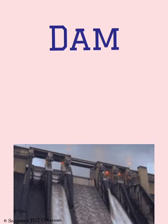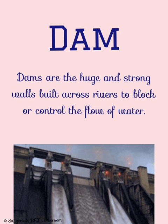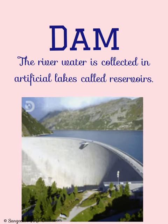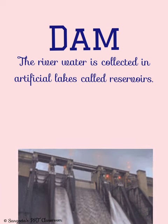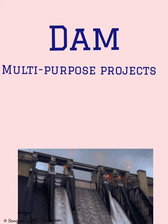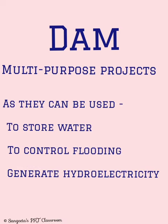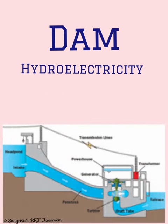Dams are huge and strong walls built across rivers to block or control the flow of water. Reservoirs, which are basically river water collected in artificial lakes, are released when the water level in the river decreases. Dams are called multi-purpose projects as they can be used to store water, to control flooding, to generate hydroelectricity, etc. Hydroelectricity is the electricity produced due to the power of water in motion.